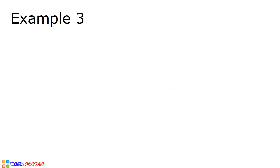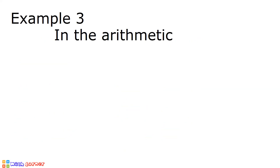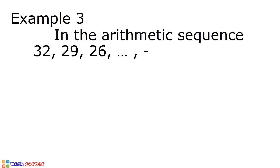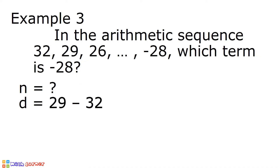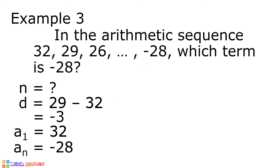Example number 3. In the arithmetic sequence 32, 29, 26, up to negative 28, which term is negative 28? Again, we are asked to solve for the value of n. The common difference is 29 minus 32, which is equal to negative 3. The first term is equal to 32. The last term, or a sub n, is negative 28.